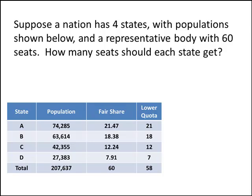When we add up those lower quotas, we get 58. But we're trying to assign 60 seats to this body, so that means we've got two extra seats left over that still need to be assigned.